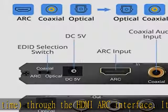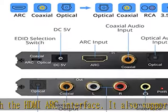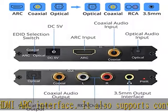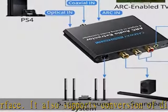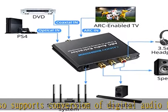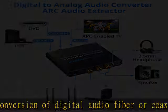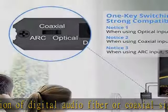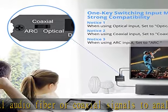When used as a digital to analog audio converter, you can also use digital audio coaxial and optical ports as signal source input to convert to analog audio R/L and 3.5mm output.